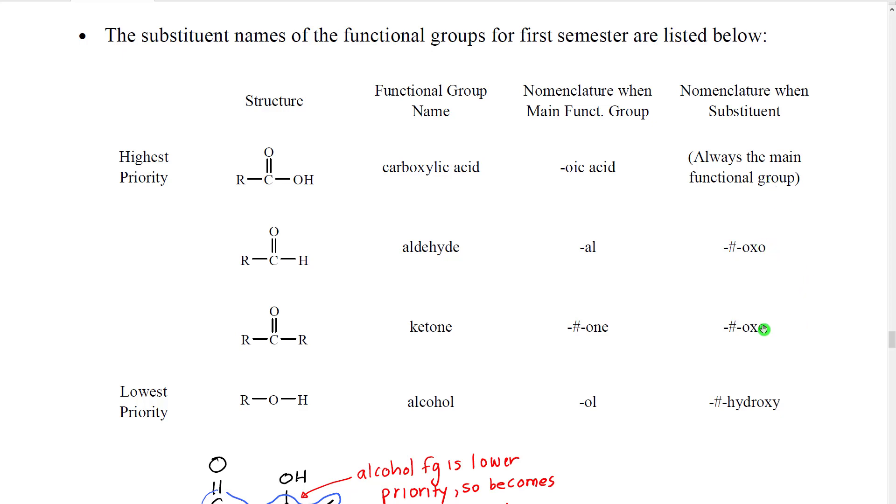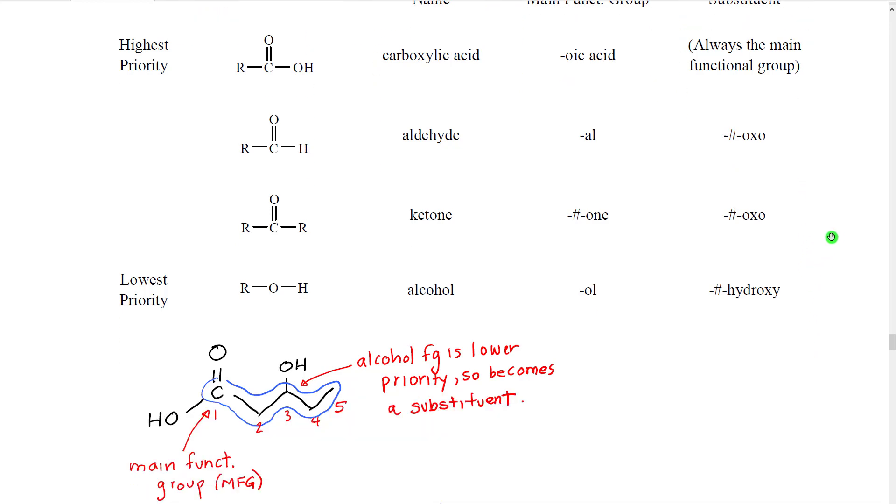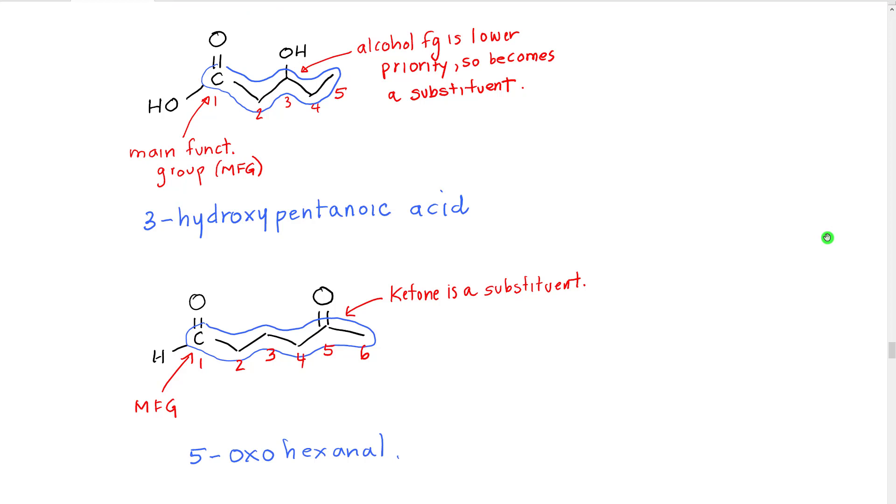But aldehydes and ketones are both called oxo, which is to indicate where the C double bond to carbonyl carbon is. And alcohols are called hydroxy, which is an abbreviation for the OH. Here are a couple of examples of naming molecules that have two or more substituents in them. Here's another example of naming molecules that have two or more different functional groups in them.